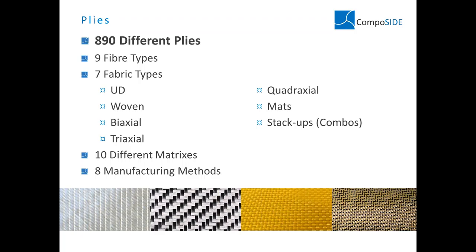These plies are all manufacturing-independent. So if your supplier has a lead time of maybe two weeks, you can go directly to a very similar supplier with the same product and get it in one week. This allows you to be independent from your manufacturer and shop around for better price or lead time.